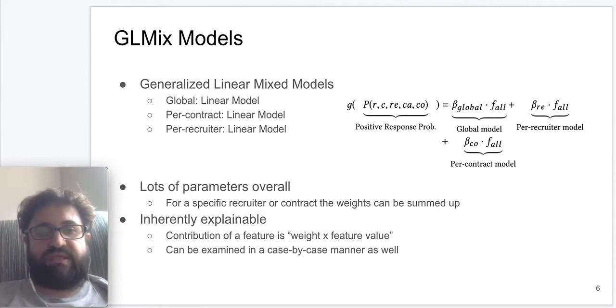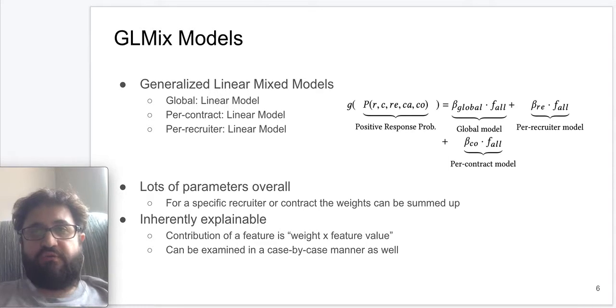Without going into too much detail here, we would like to introduce generalized linear mixed models, and they are inherently interpretable since once we know the entity that we are trying to rank candidates for, such a model amounts to a linear case. On the other hand, the model has a single set of global weights, but a separate set of weights for every entity in the system. In our case, entities are recruiter IDs and contracts, and these contracts can be interpreted as a group of recruiters. Of course, a separate set of weights are only trained for GLMix models if there is sufficient usage data for that entity.